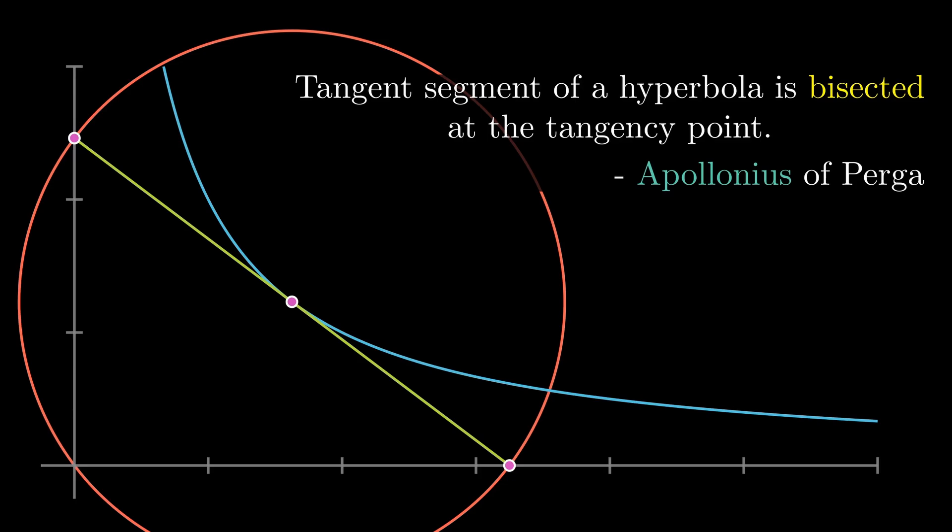By the converse of the Thales theorem, we know that the origin must lie on this circle. Labelling some of the points, we see that O-P-E must be equal to P-A because they are both radii to the same circle. The angle opposite these sides in triangle O-P-A must then be equal.